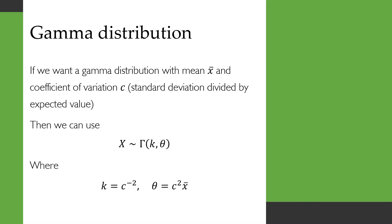One of the nice things about the gamma distribution is that it's very easy to make a gamma distribution with a particular mean and a particular coefficient of variation. So the coefficient of variation is the standard deviation divided by the expected value, and if we let that be c, then we can use a gamma distribution where k is c to the power of minus two, so one over c squared, and theta is c squared times that mean x bar that we wanted.